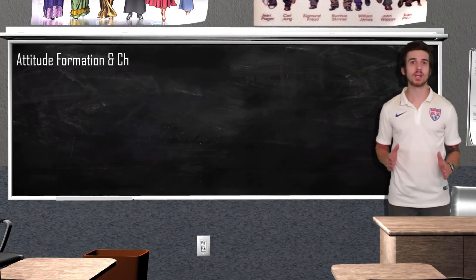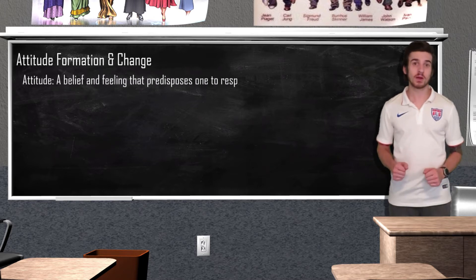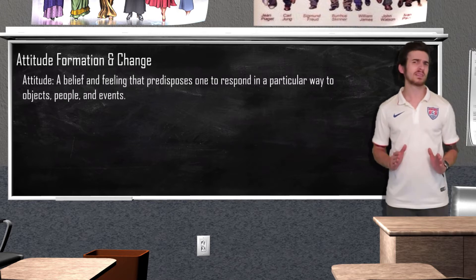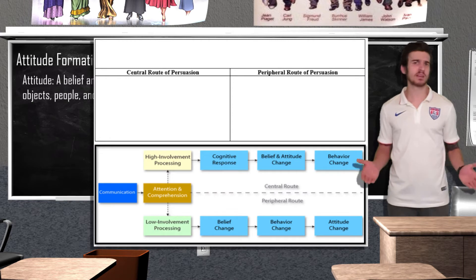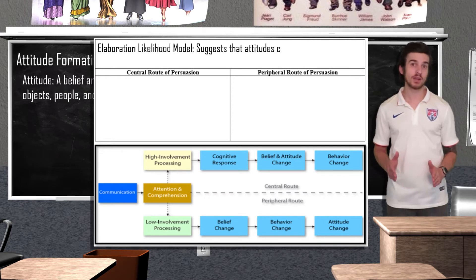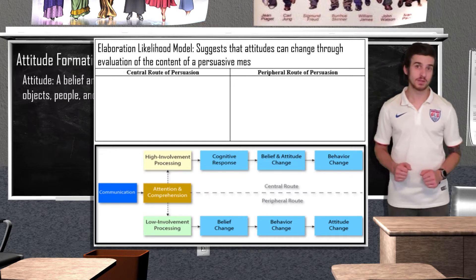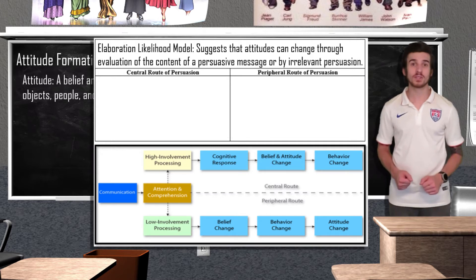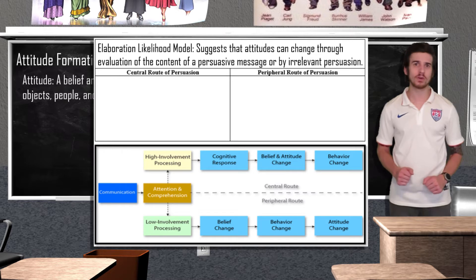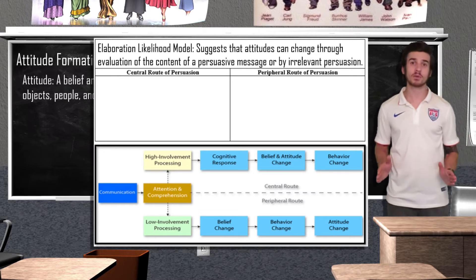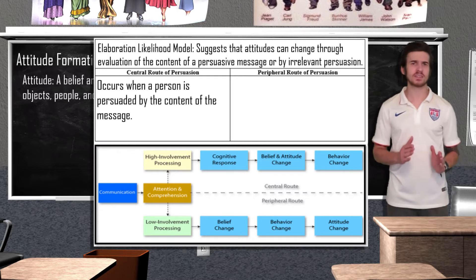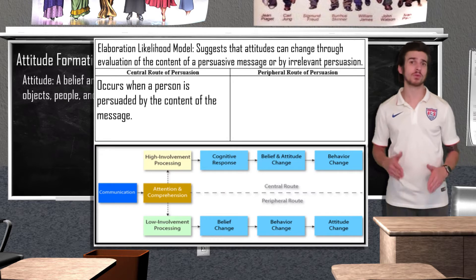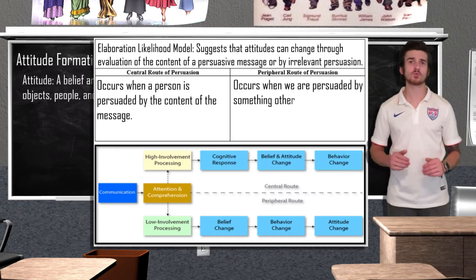Now let's move on to attitude formation and attitude change. Attitude is a belief and feeling that predisposes someone to respond in a particular way to objects, people, and events. If we think that someone isn't the nicest person ever, we might dislike them and act unfriendly towards them. Oftentimes people can be persuaded and their attitudes can change. The elaboration likelihood model suggests that attitude can change through evaluation of the content of a persuasive message or by irrelevant persuasion. The elaboration likelihood model includes both the central route to persuasion and the peripheral route to persuasion. When we're more invested and have the time and energy to think over an issue, we are more likely to be persuaded through the central route — which occurs when a person is persuaded by the actual content of a message. When we're less invested or pressed for time, we're more likely to be persuaded through the peripheral route — when we are persuaded by something other than the actual content of the message.